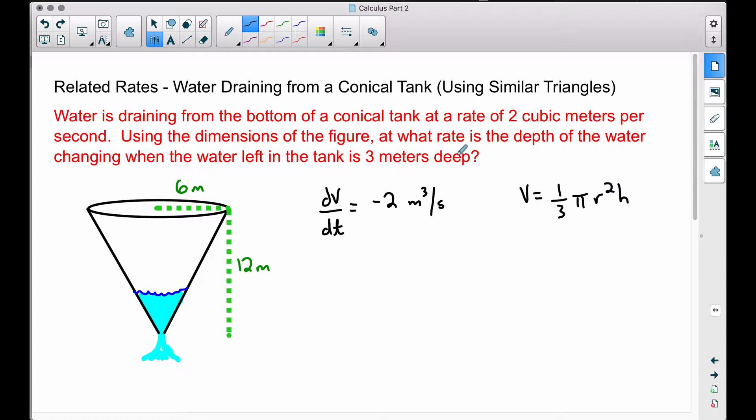To determine which one we need, let's read this question again. At what rate is the depth of the water changing? At what rate is the height of the water? Same thing. That means we want to have an h down here so that when we differentiate the h, we're going to get dh/dt, because we're differentiating with respect to time.